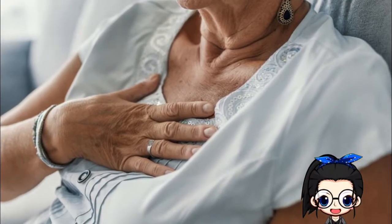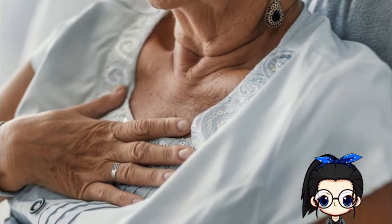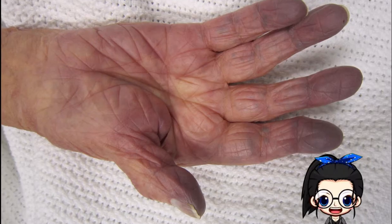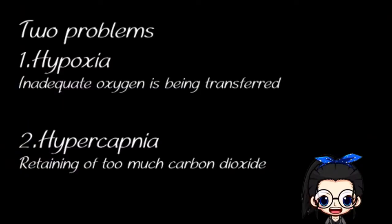When acute respiratory failure occurs, there are two problems with this gas exchange. Number one, hypoxia, in which inadequate oxygen is being transferred, and number two, hypercapnia, in which the client is retaining too much carbon dioxide.